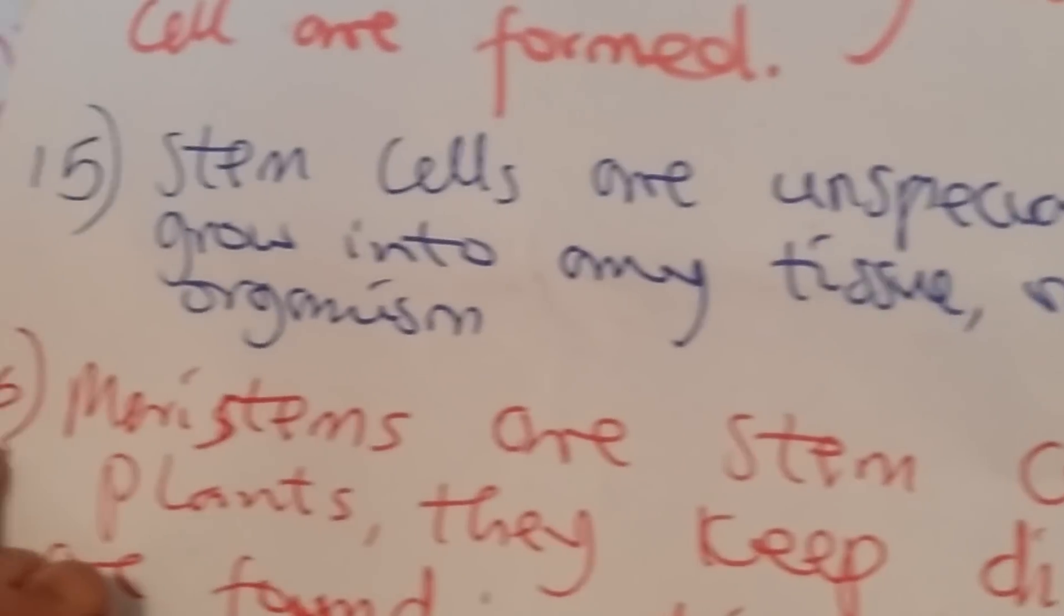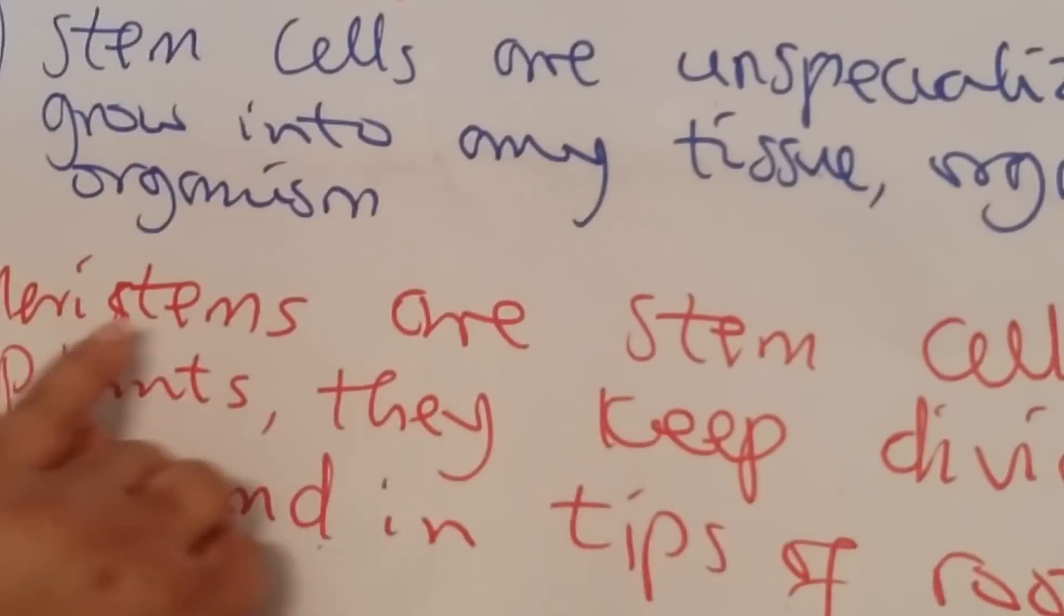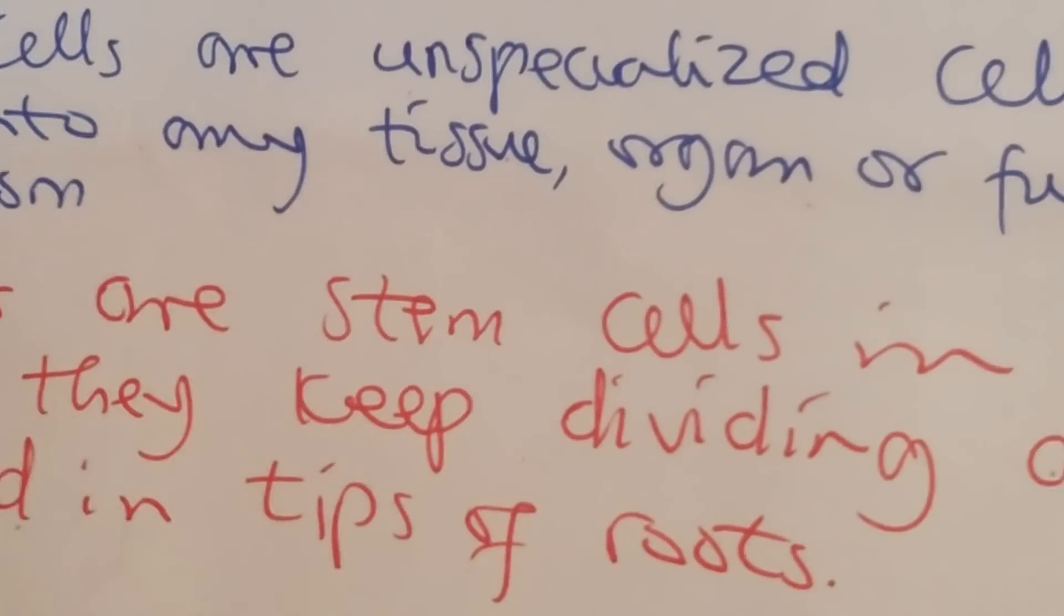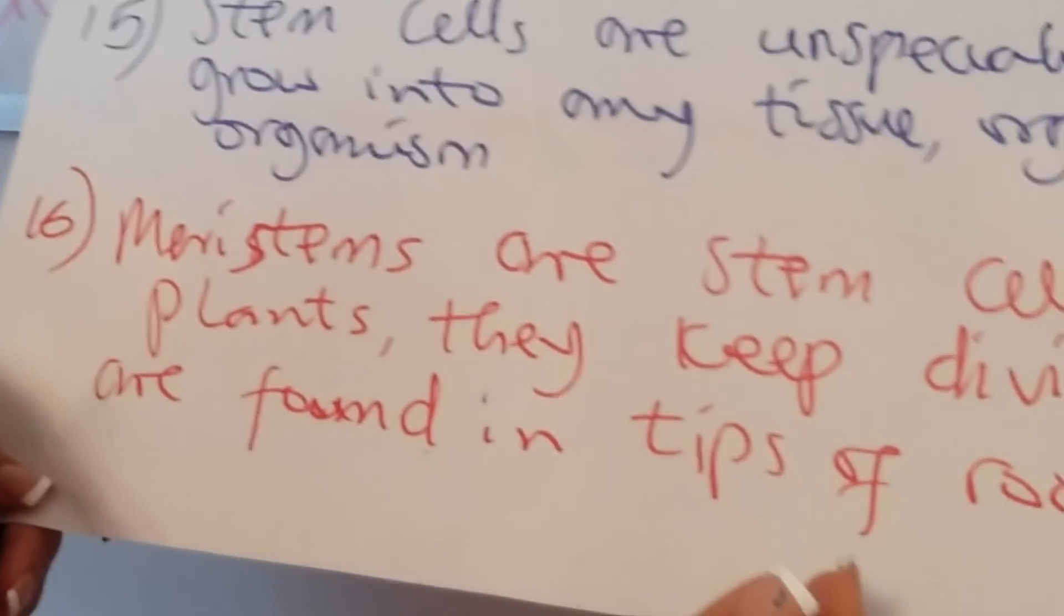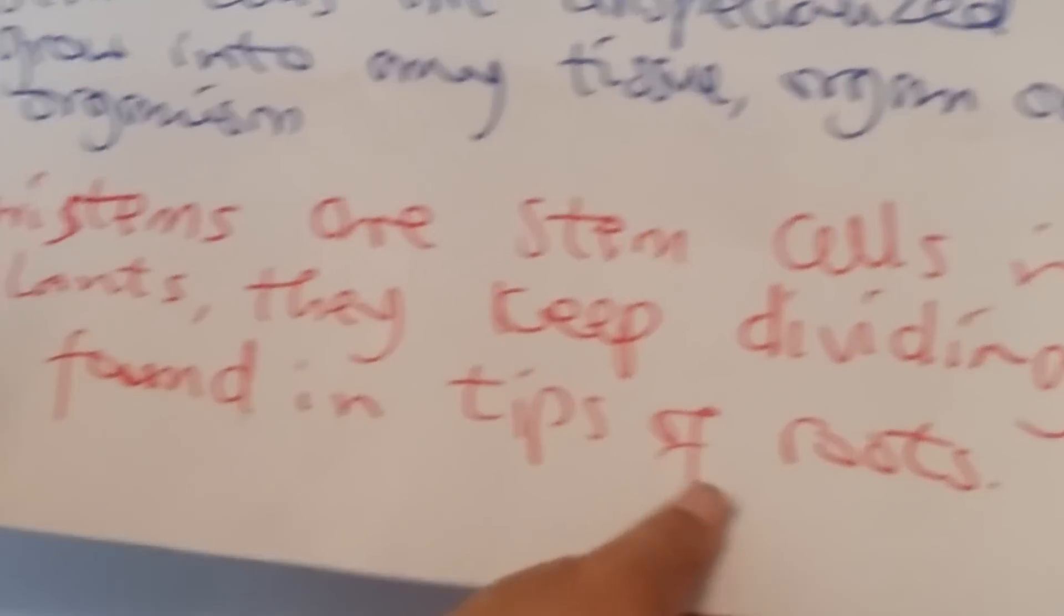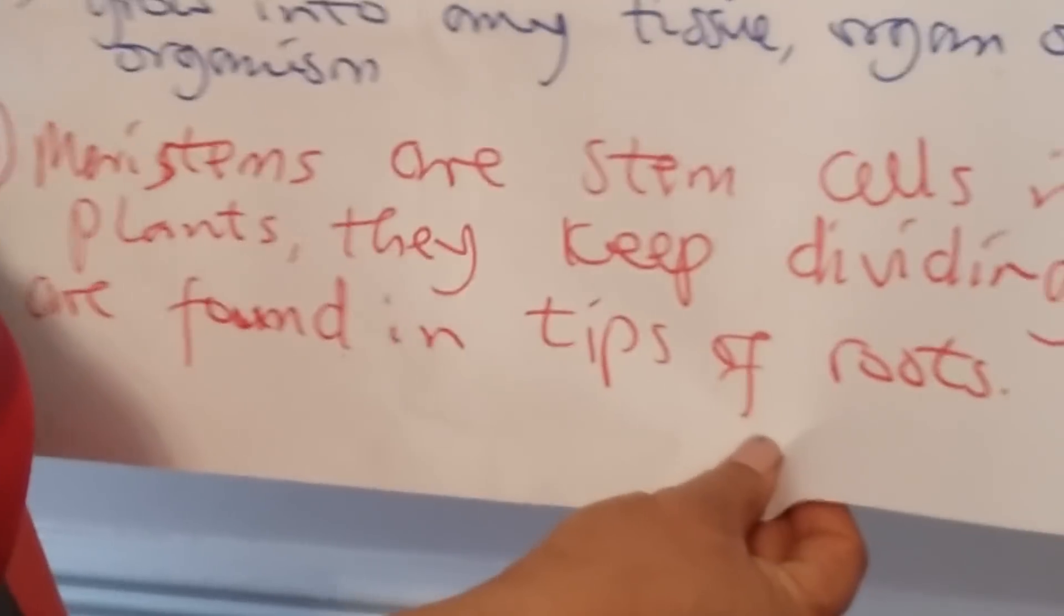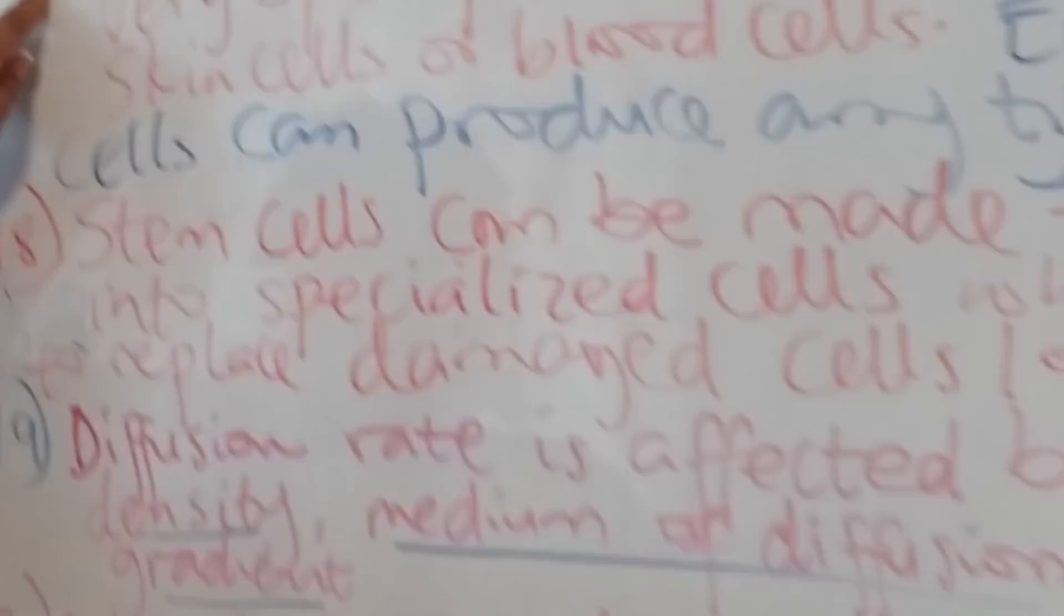Question 16: What are meristems? Meristems are stem cells in plants. They keep dividing and are found in the tips of roots.